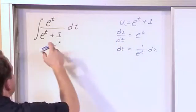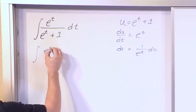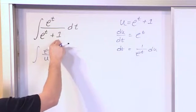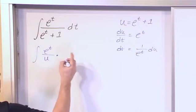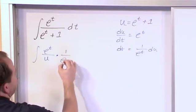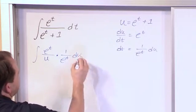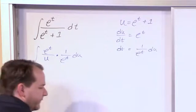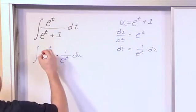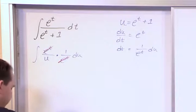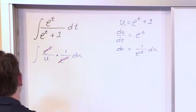So when we stick all this stuff in here, what we get is integral e to the t over u, because now this whole denominator is u, times dt is 1 over e to the t du. So after we did our substitution and we put everything in here, we see that the e to the t on top cancels with the e to the t on the bottom, which is exactly what we wanted to be left with.